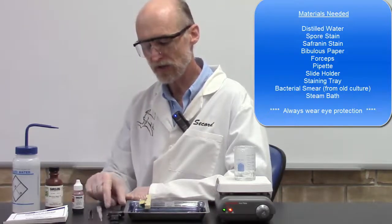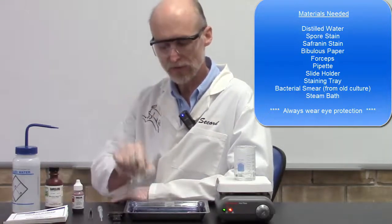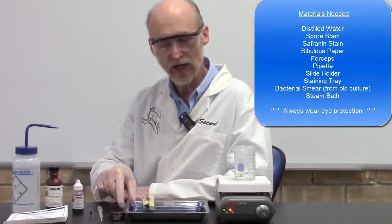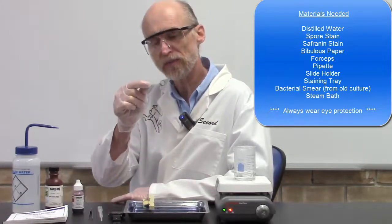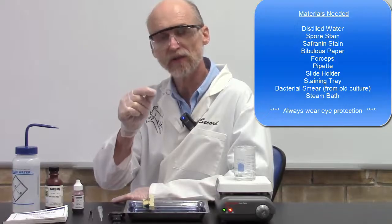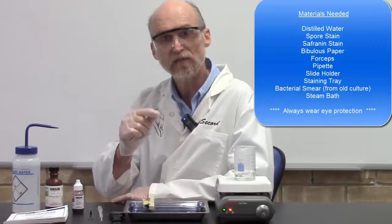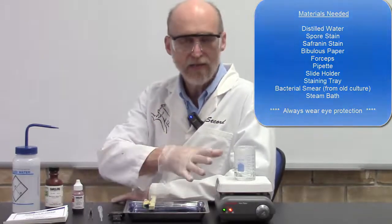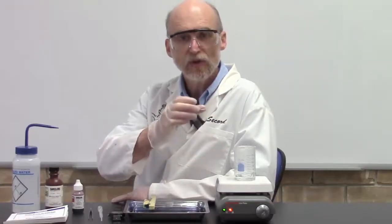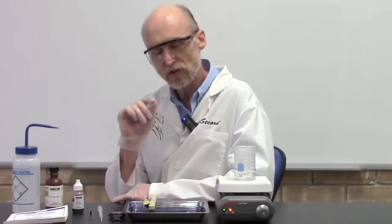A pipette to apply your spore stain, some way of keeping track of time, a slide holder, a staining tray, and a bacterial smear. Make sure the bacterial smear is from a bacterial culture that is at least 48 hours old because you need to give the bacteria time to sporulate. And finally, a steam bath, which we use to drive the spore stain into the spores.